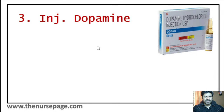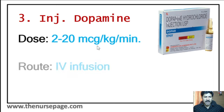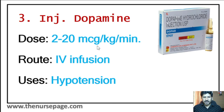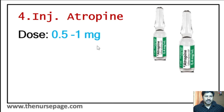Third injection is dopamine. Dose is 2 to 20 microgram per kilogram per minute, also administered through IV infusion. It is used in hypotension and shock, mainly related to cardiogenic causes. Noradrenaline is used for common hypertension conditions, but dopamine is usually used for hypotension or shock due to cardiogenic causes.